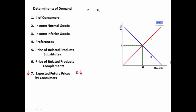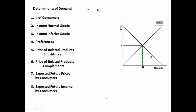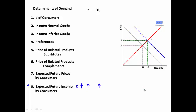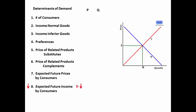So demand decreases now, driving that price down and the quantity down. If people expect their future incomes to go up, they'll buy now — they might even buy on credit because they know they'll have more money to pay it off — and so this will increase demand, driving the price up and the quantity up. If people think they're going to lose their jobs and their future income is going to go down, then the demand for goods and services is going to decrease, driving the price down and the quantity down.